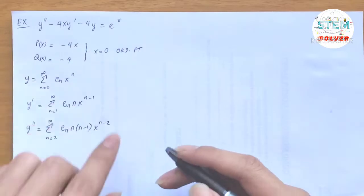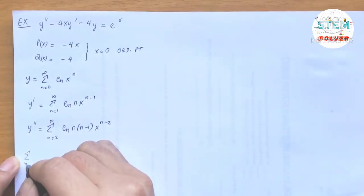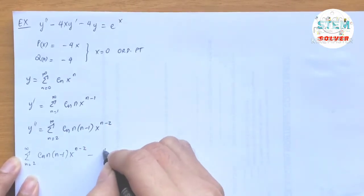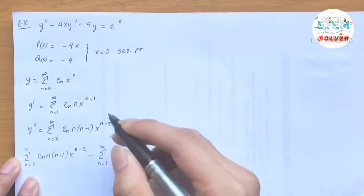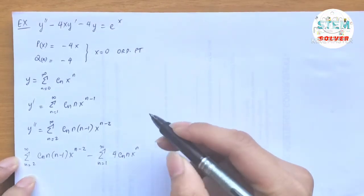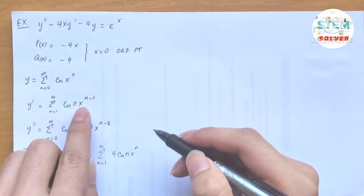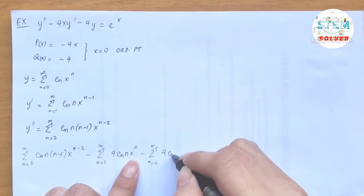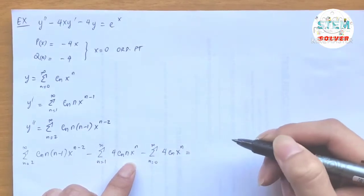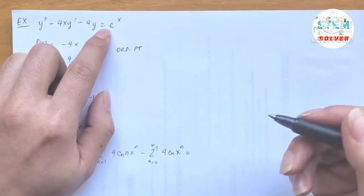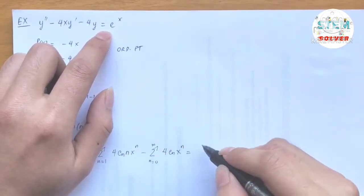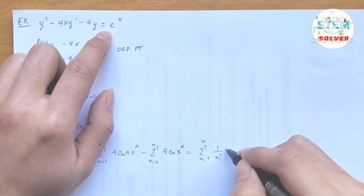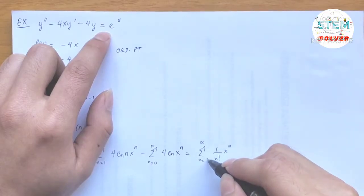Now let's plug this into the differential equation. We get the power series from 2 to infinity of c_n · n · (n−1) · x to the n−2, minus the power series from 1 to infinity of 4 c_n · n · x to the n (since x times x to the n−1 adds exponents), minus the power series from 0 to infinity of 4 c_n · x to the n, equal to e to the x. We rewrite e to the x as the power series from n=0 to infinity of x to the n over n factorial.